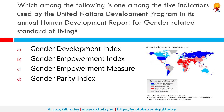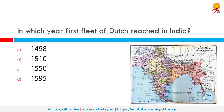Which among the following is one of the five indicators used by the United Nations Development Programme in its annual Human Development Report for gender-related standard of living? The correct answer is the Gender Development Index. The GDI, together with the Gender Empowerment Measure, were introduced in 1995 in the Human Development Report by the UNDP.